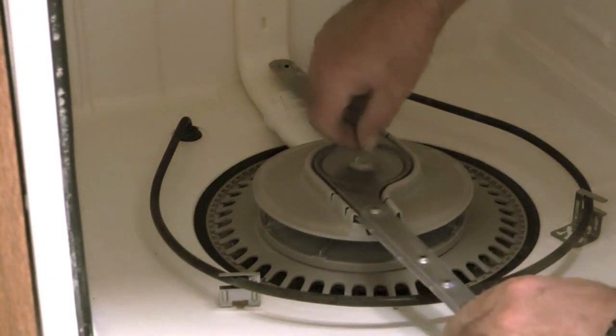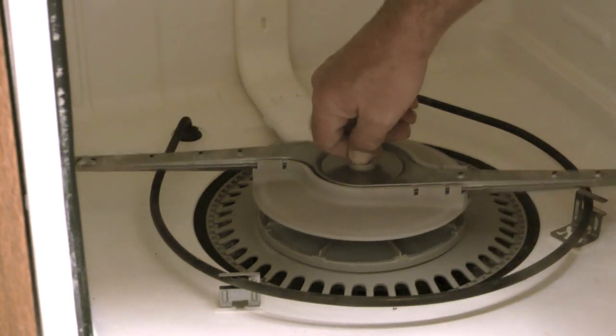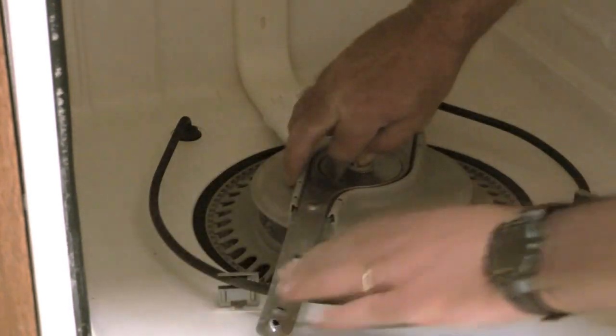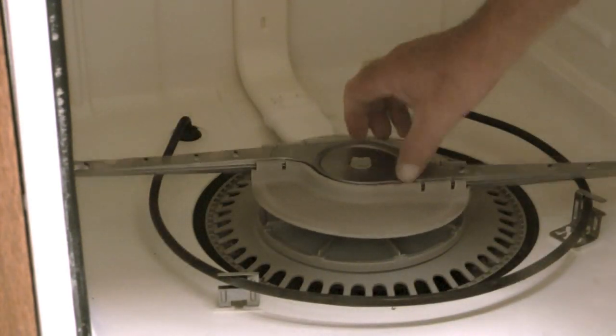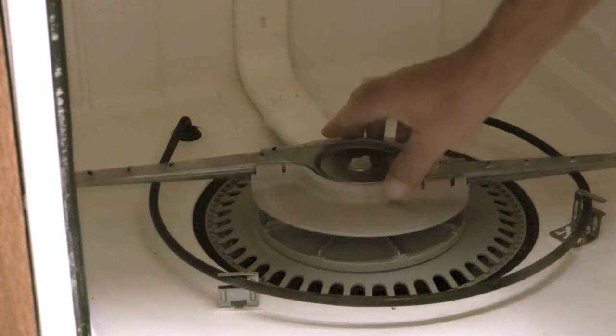Next I need to remove the lower spray arm. So I'll grasp this plastic nut and twist counterclockwise with the spray arm while holding the nut firm. Once it's loose I'll pull the spray arm up and out.